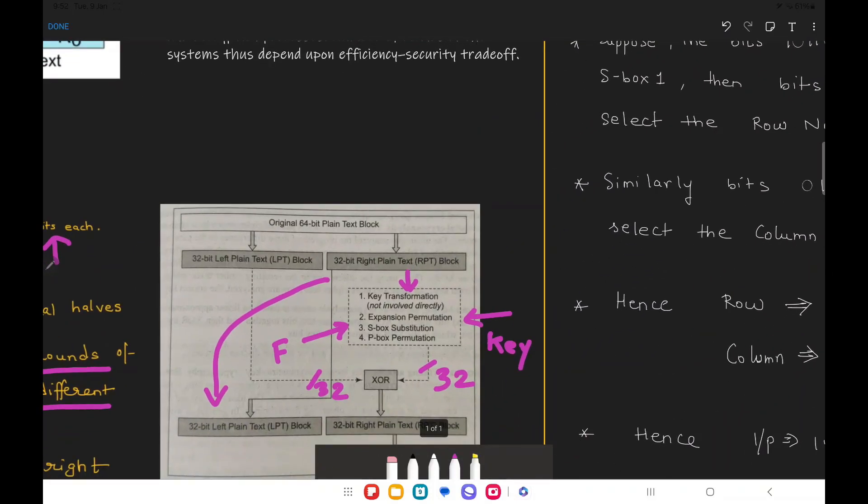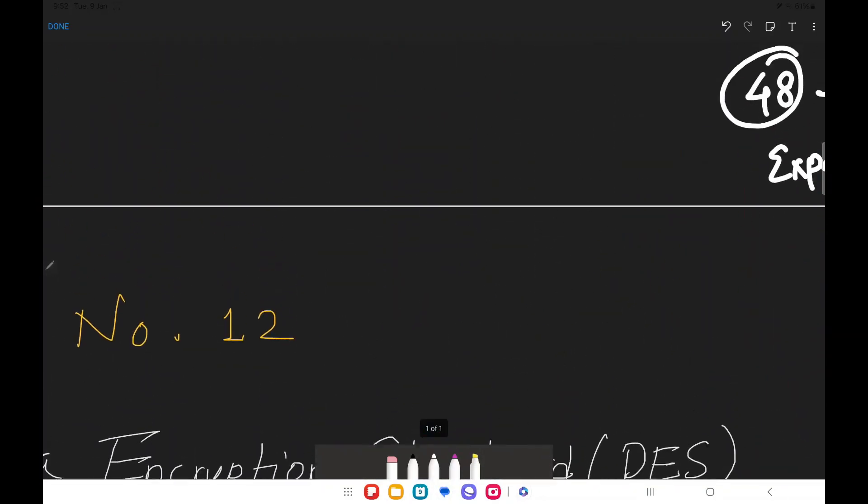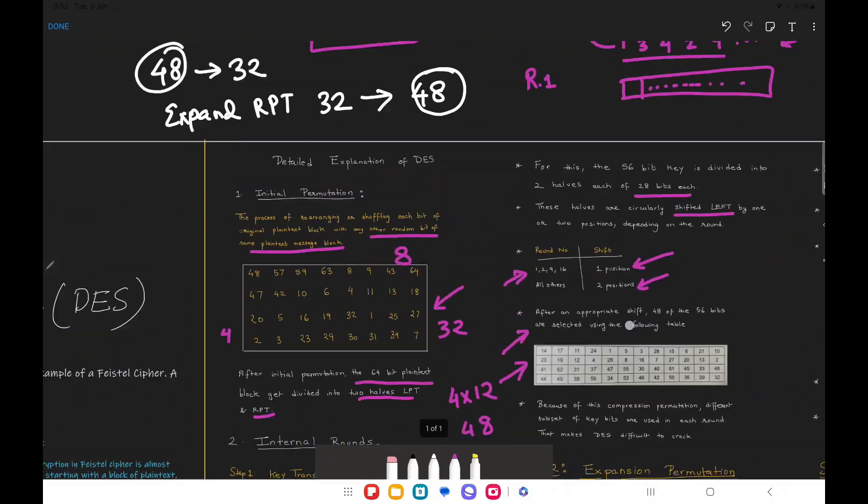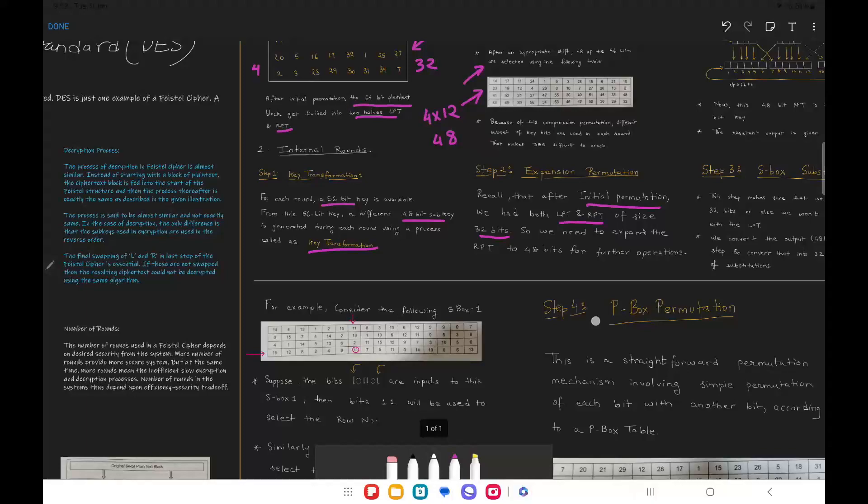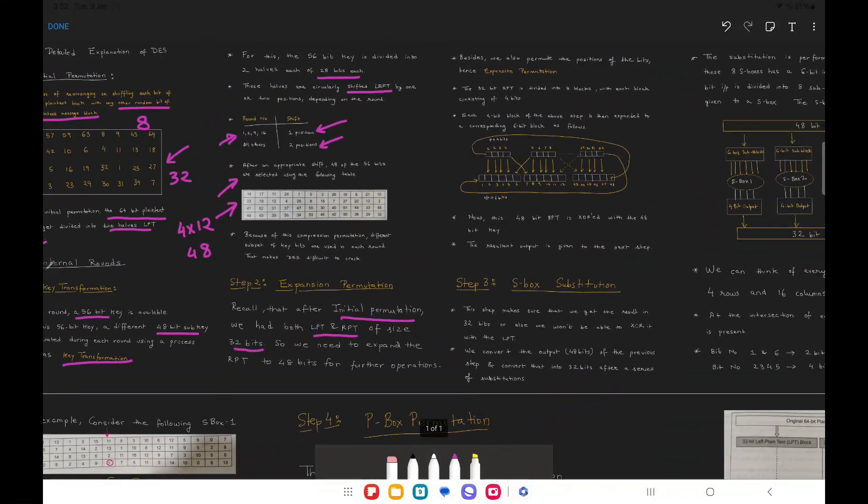We saw in the previous video that if we are not in a position to reduce the size of the keys to 32 bits, we have another option: why not increase the size of the RPT from 38 bits to 48 bits? That is what we are going to do. Let's start this discussion of expansion permutation in detail.